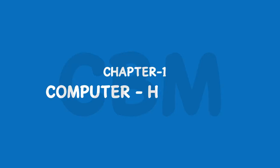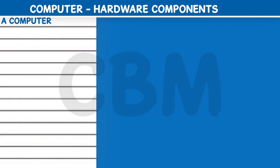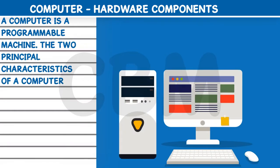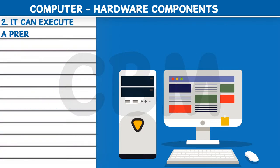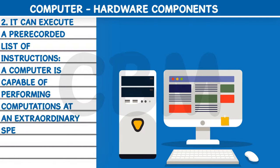Chapter 1: Computer Hardware Components. A computer is a programmable machine. The two principal characteristics of a computer are: first, it responds to a specific set of instructions in a well-defined manner; second, it can execute a pre-recorded list of instructions, meaning a computer is capable of performing computations at an extraordinary speed.